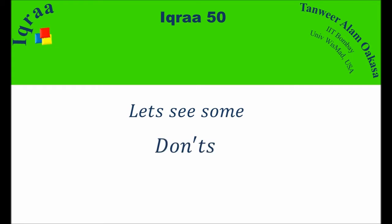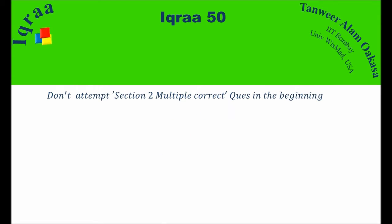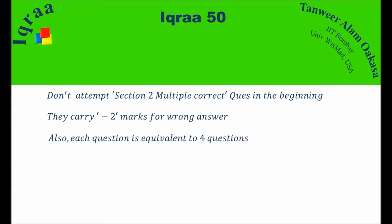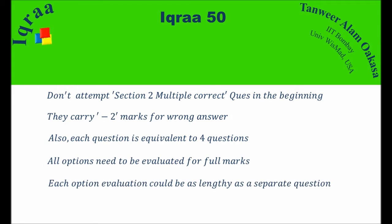Let's see some don'ts. Don't attempt Section 2 multiple-correct questions in the beginning, because they carry minus 2 marks for a wrong answer. Each question is effectively equal to 4 questions, since all 4 options need to be evaluated for full marks, and each option evaluation is as lengthy as a separate individual question.